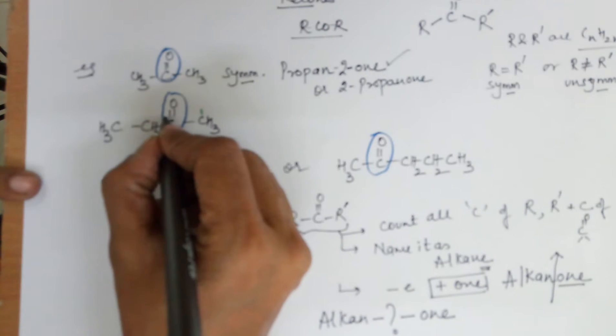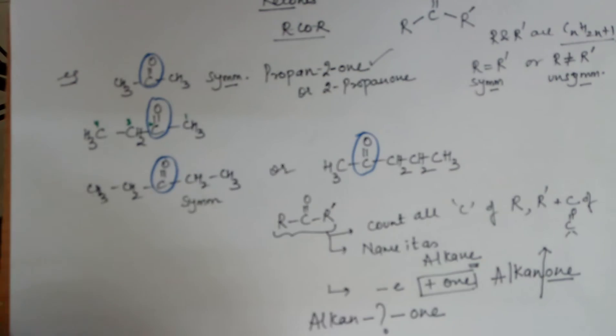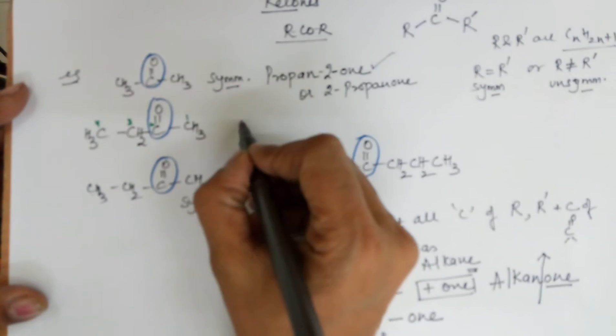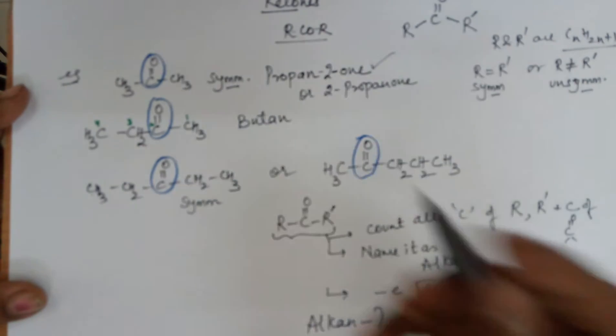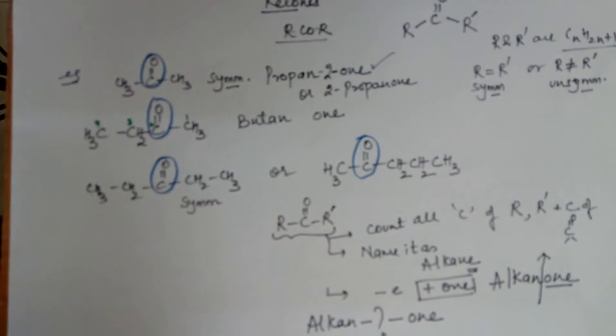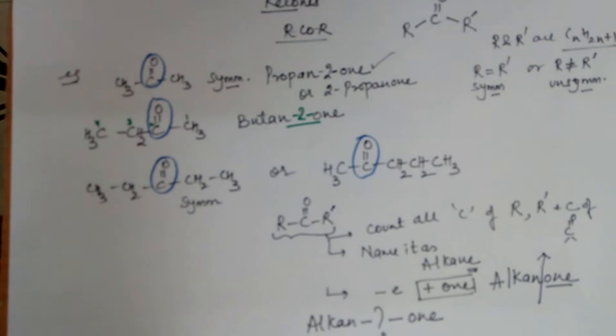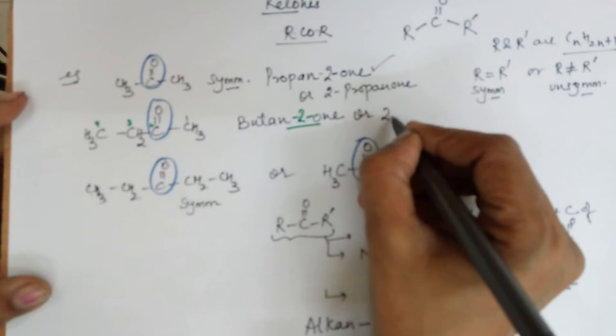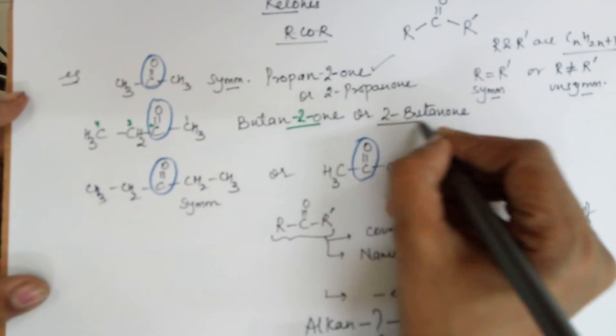You have the first carbon, the second carbon, the third carbon and the fourth carbon. So total carbons are 4 in this. So the name becomes butane. Remove the E, add O-N. You need to specify the position of the ketonic group, which is the second. So you can write it as butane-2-one or 2-butanone, also acceptable.